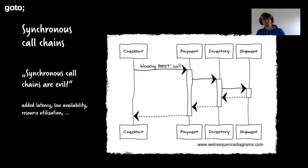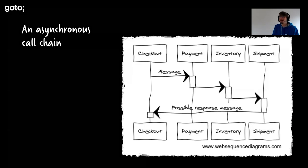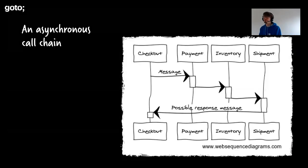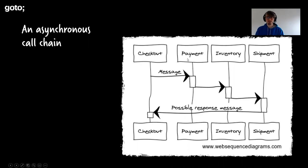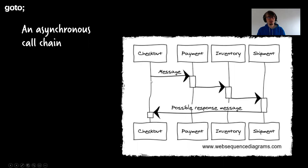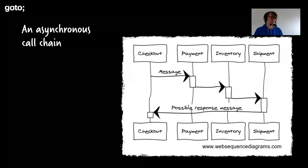You probably want asynchronous communication instead, because it mitigates a lot of these problems. If you send a message to payment, payment relays the message to the next service like inventory, and so on — you're not dependent on payment's availability. If payment isn't there, the message will wait in the queue until payment becomes available, and you're not blocking any thread. Asynchronous communication is by far a better approach here.